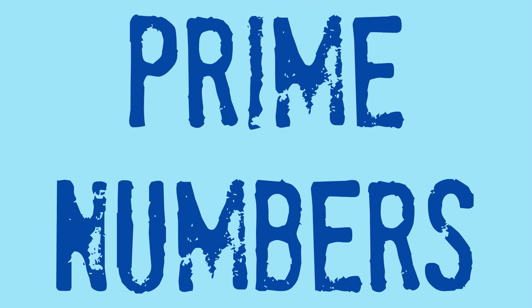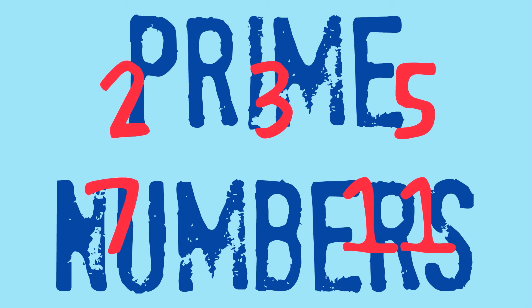So prime numbers are numbers that only have two divisors, the number 1 and the number itself. So the numbers 2, 3, 5, 7 and 11 are prime, but the number 9 is not prime because 9 has three divisors or factors: the numbers 1, 3 and 9.